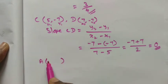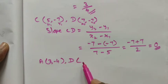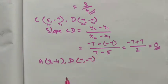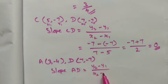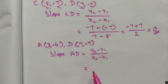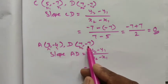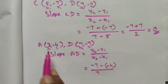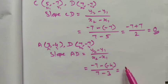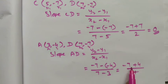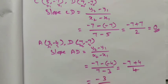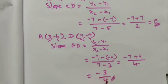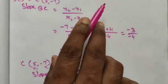Finally, finding the slope of AD. Point A is (3, -4) and point D is (7, -7). Slope AD = (y2 - y1) / (x2 - x1). Substituting: (-7 - (-4)) / (7 - 3) = (-7 + 4) / 4 = -3 / 4. So the slope of AD is -3/4.